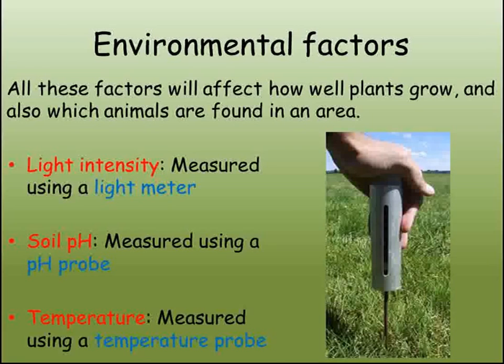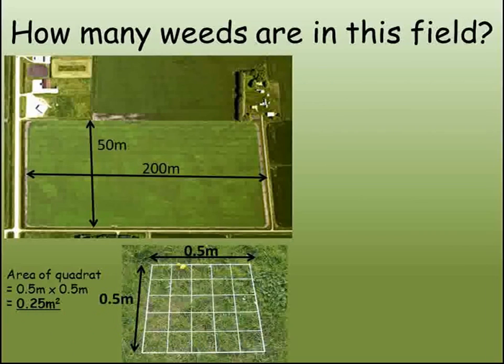Ecologists are interested in the distribution of organisms in different places. This means they want to know which species are present in an area and how many of them there are. Often, they're dealing with very large areas or very small organisms, so that counting every single one is extremely difficult and not realistic. To help, they use sampling to make an estimate about the number of the species.